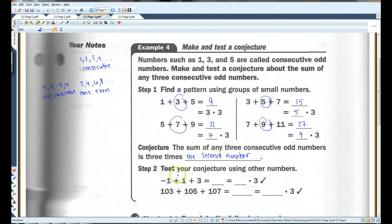So, let's test our conjecture using other numbers. Let's try negative one plus one plus three. That gives us three. The middle number is one. One times three is, in fact, three. Here, this gives us, let's see here. That's 315. Middle number is 105. 105 times three is 315. We're good. So, both of those work.